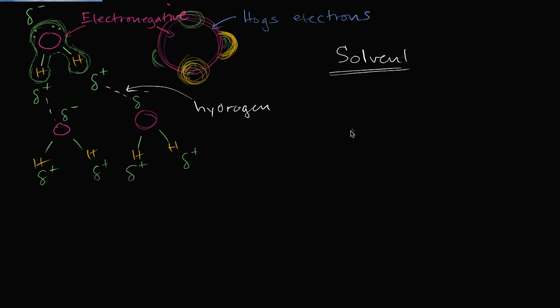Water's ability to be a solvent means that it's easy for certain things to be dissolved inside of water. That's super important because that's how a lot of chemistry occurs — by things getting dissolved in water and then interacting and bumping into other things. This is actually what's happening inside of cells in the cytoplasm, which is mostly water and acts as a solvent, allowing a bunch of interactions to happen between different types of molecules. Let's think about why water is a good solvent, what types of things it can dissolve easily, and what types of things it might not dissolve so easily.